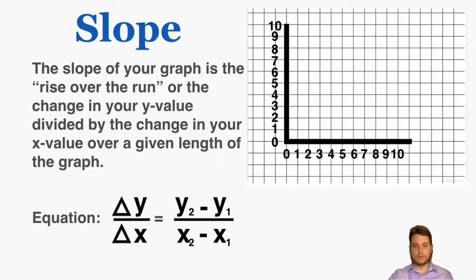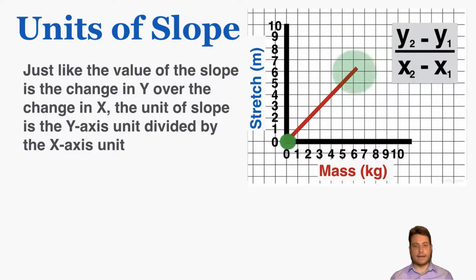The slope of a graph is the rise over run, or the change in your y value divided by the change in your x value over a given length of the graph. Because the value of the slope is the change in y over the change in x, the unit of slope is the y-axis unit divided by the x-axis unit.